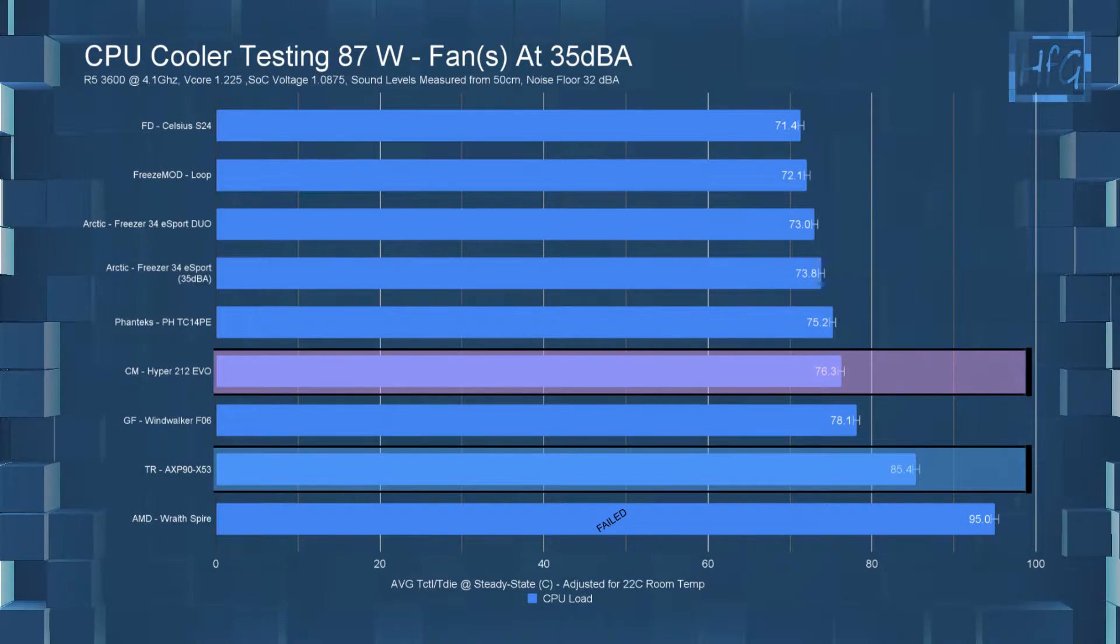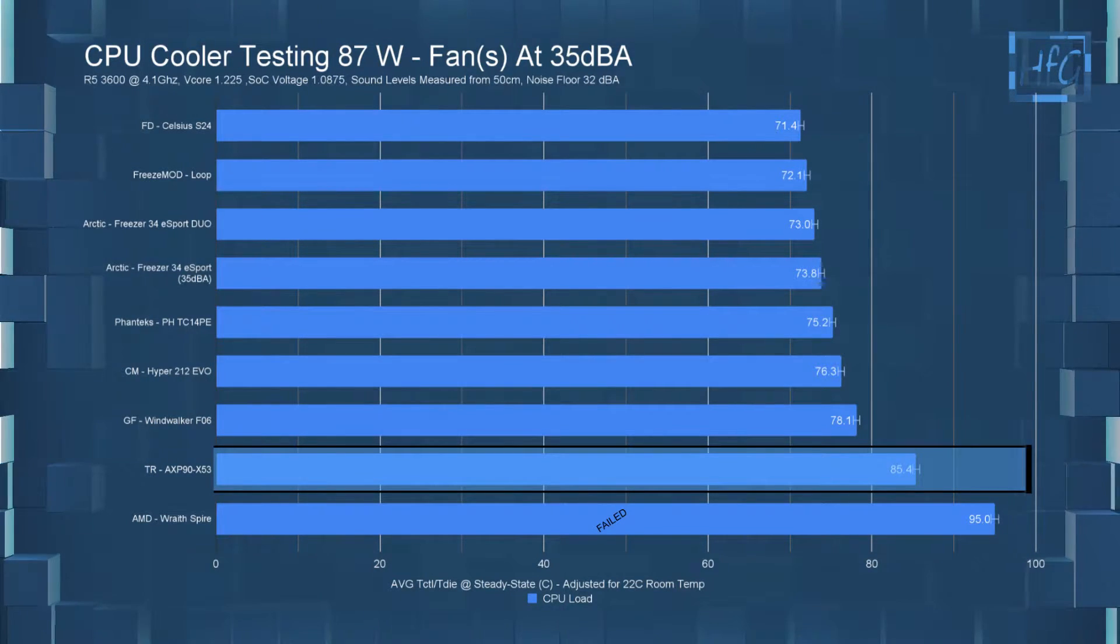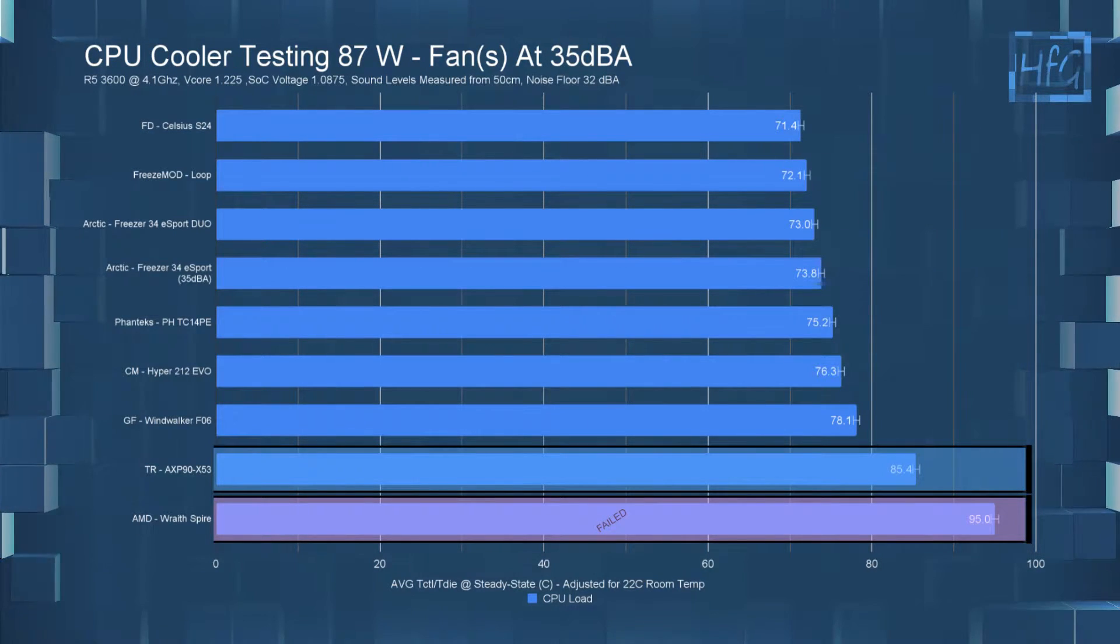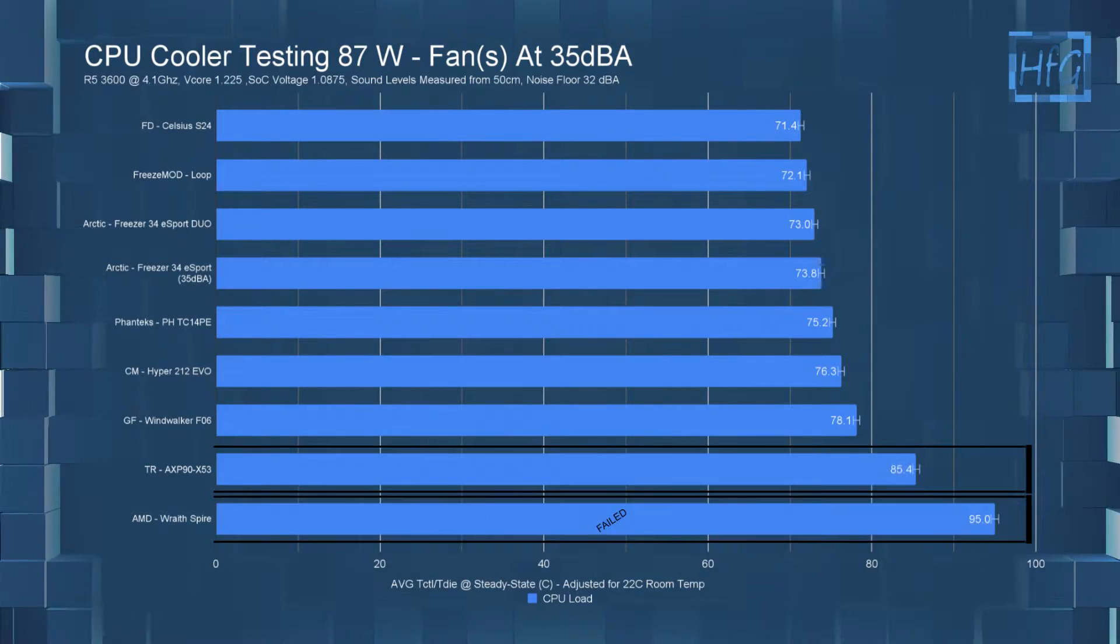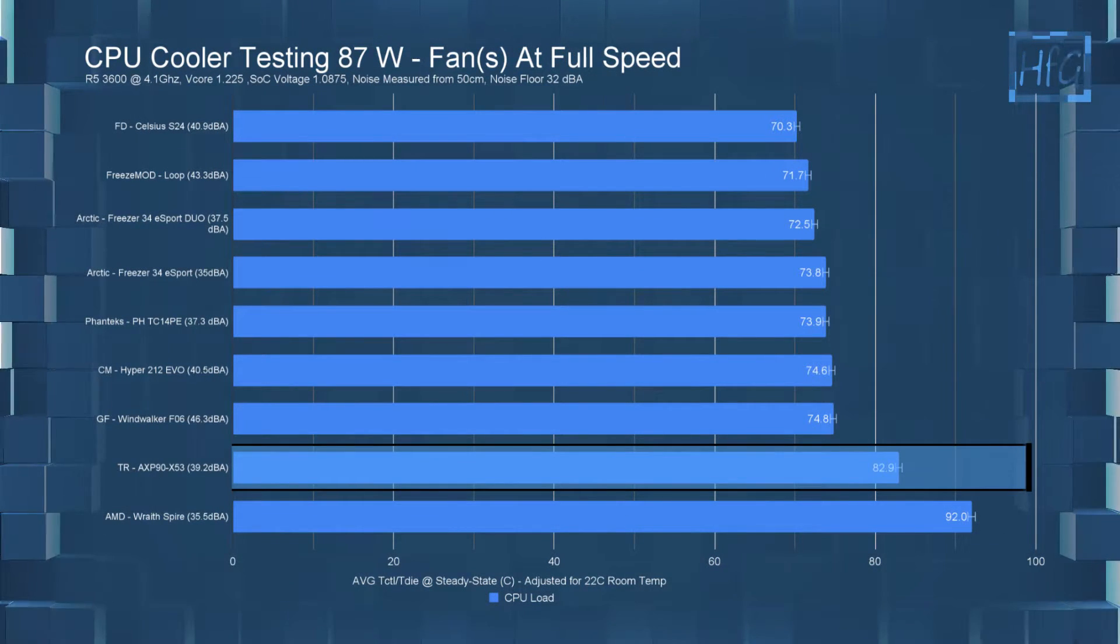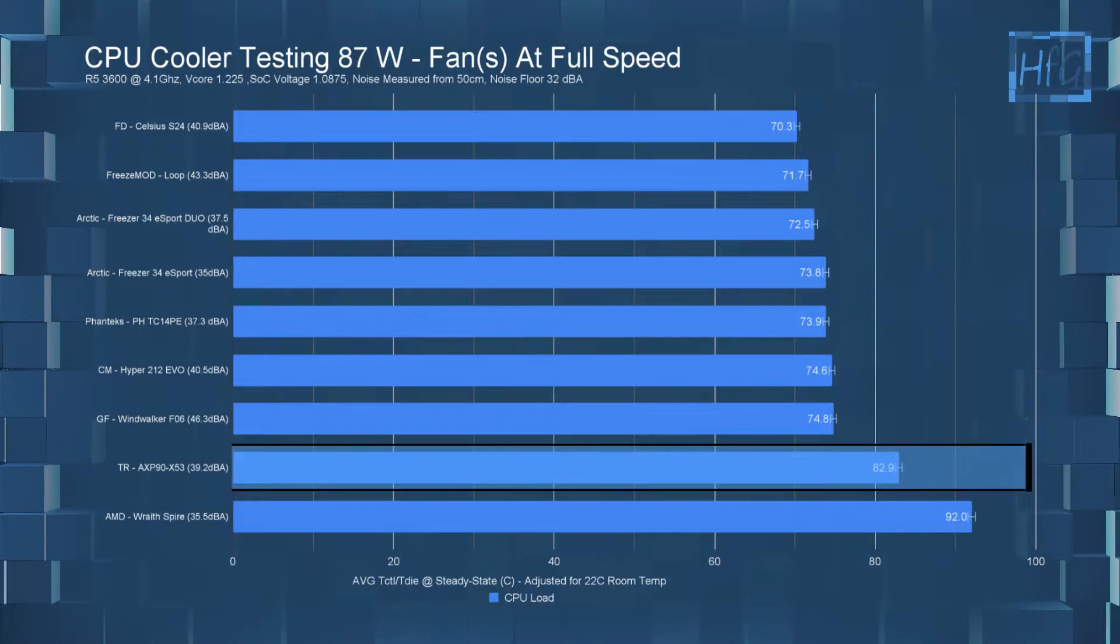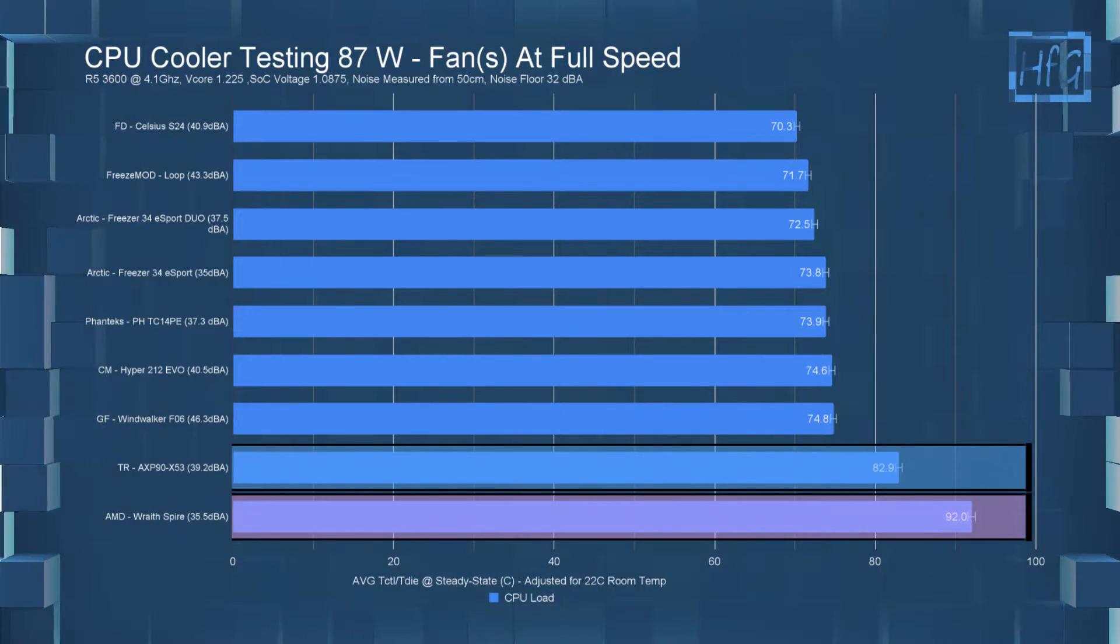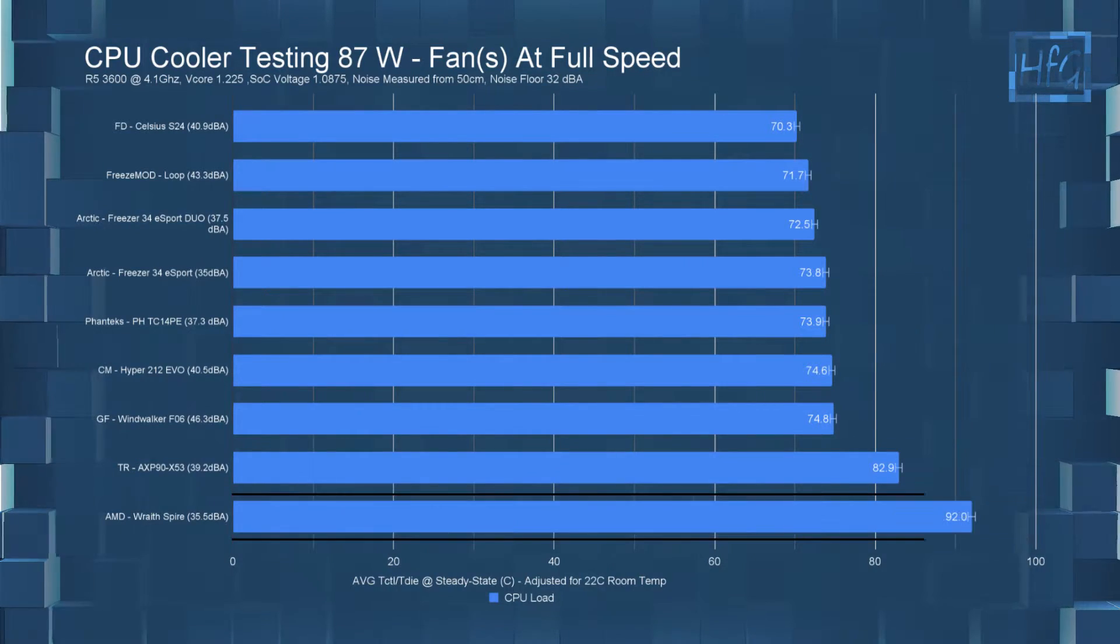In the noise equalized test, it had a temperature of 85.4 C, which has it 2nd from the bottom because the Wraith Spire cooler wasn't able to pass this test. Then at full speed, the X53 had a temperature of 82.9 C. So it's again 2nd from the bottom, but this time the Wraith Spire was able to finish the test.